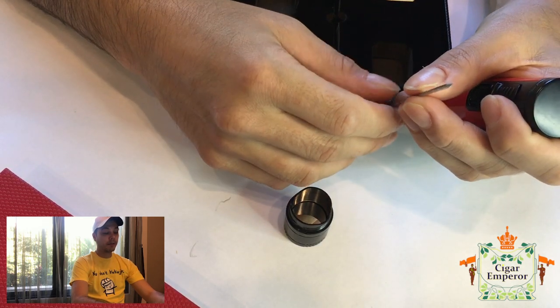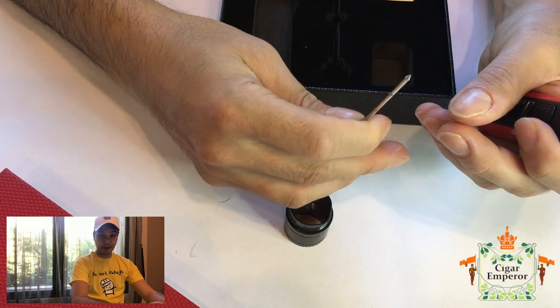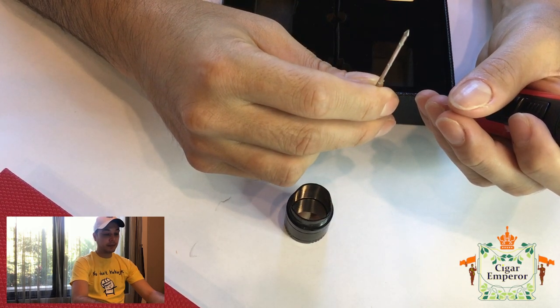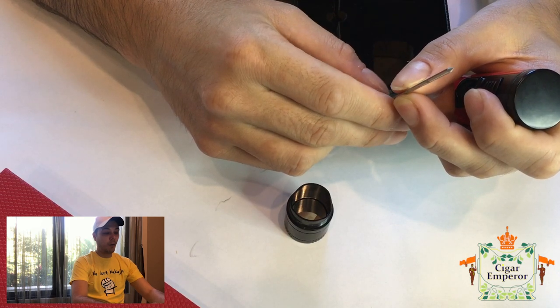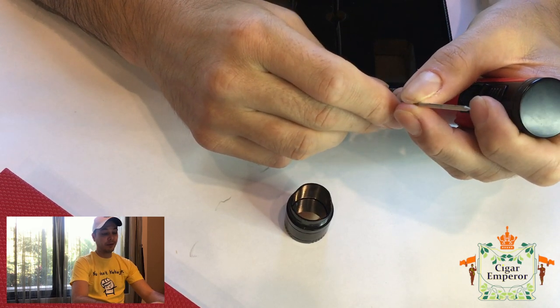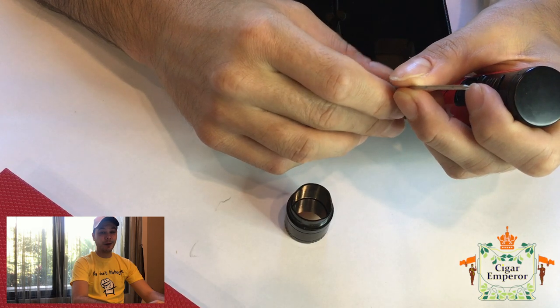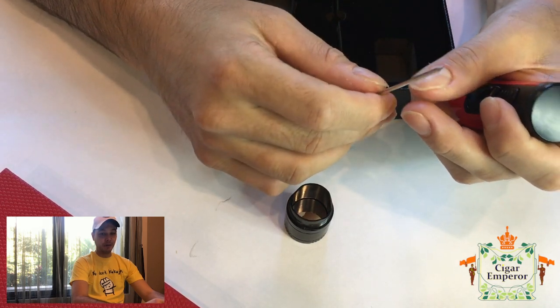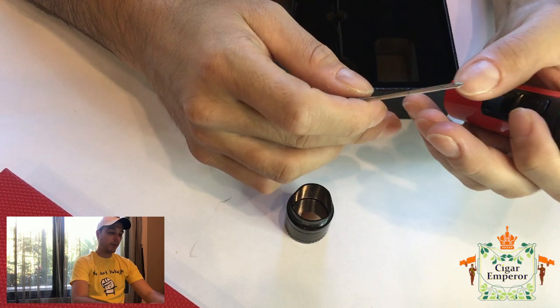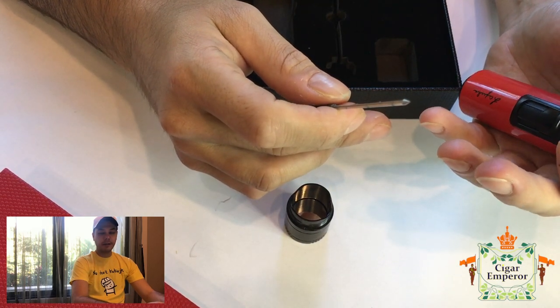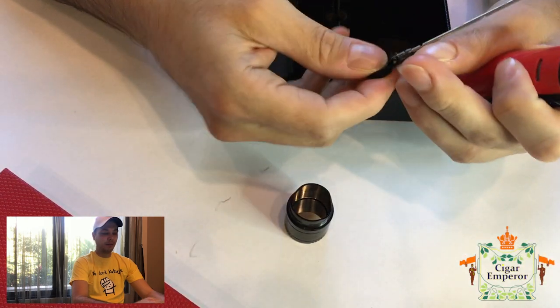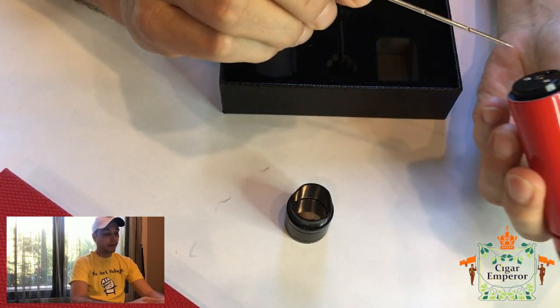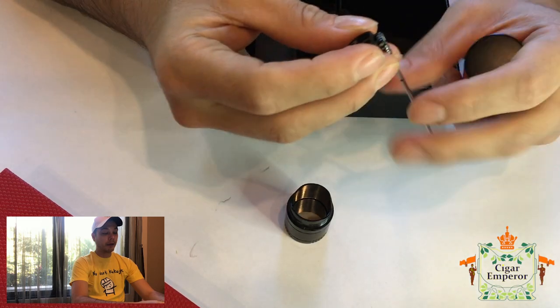Or you can do what some people do which I highly do not recommend is to use this as a pick to hold your cigar while you finish the rest of it, which is very ungentlemanly and very uncouth. Although some people insist that oh we want to smoke it right to the end. Dude, just get another cigar you know. You don't have to smoke it all the way to the end. But at least it has this tool so you can unplug those cigars.